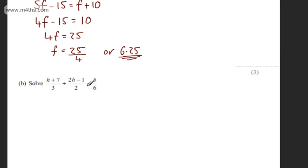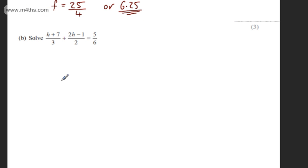In part B we're asked to solve h plus 7 over 3 plus 2h minus 1 over 2 is equal to 5 over 6. The question carries 4 marks.